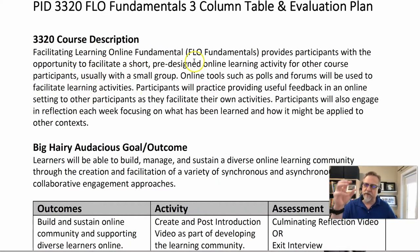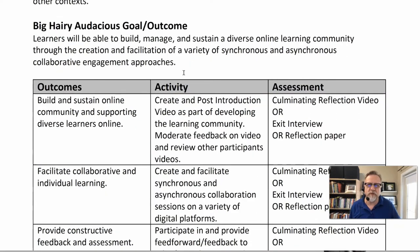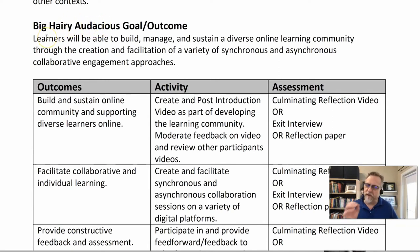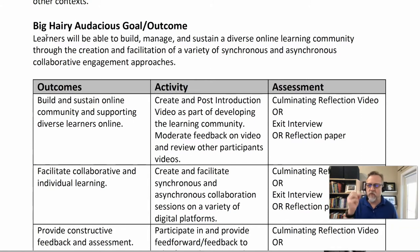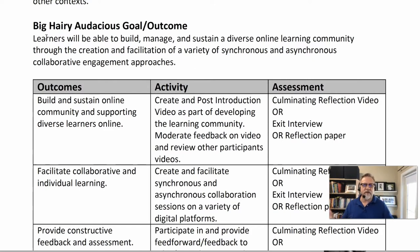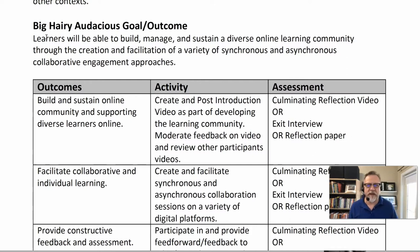When developing my three column table, I like to put the course description at the top so I have context for what's going to be in the calendar. But perhaps one of the most important aspects of my design is the development of the big, hairy, audacious goal — what the learner will be able to do when they're done, months after, what is the takeaway, who will they become, what differences are going to be in their lives. Learners will be able to build, manage, and sustain a diverse online learning community through the creation and facilitation of a variety of synchronous and asynchronous collaborative engagement approaches.